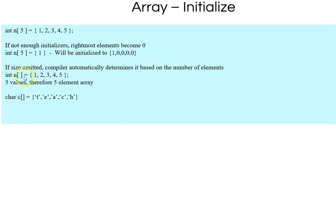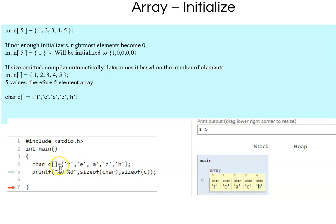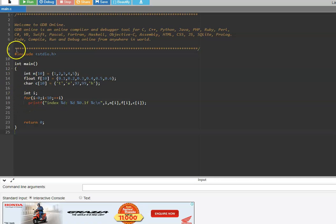Similarly for characters: char c[] = {'t','e','a','c','h'} allocates 5 bytes since each char is 1 byte. For example, char c[] = {'t','e','a','c','h'} — with single quotes indicating characters — and printing sizeof(char) and sizeof(c) gives 1 and 5 respectively: size of a character is 1 byte and the total array is 5 bytes.